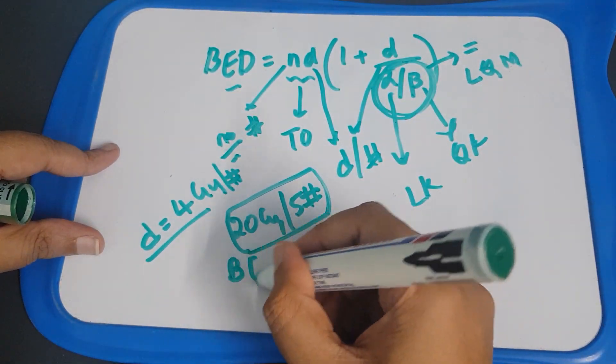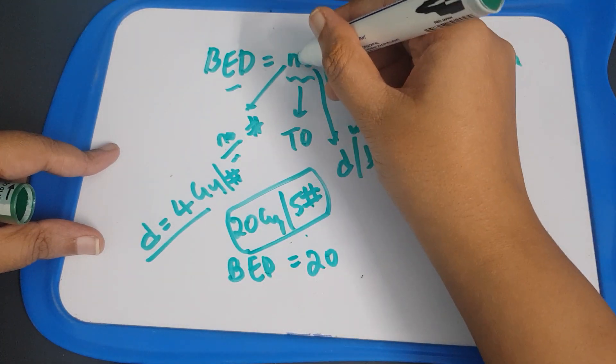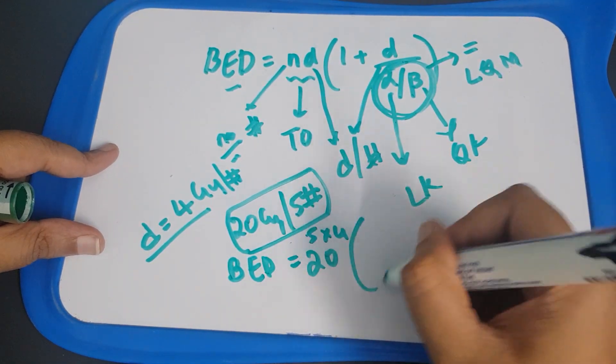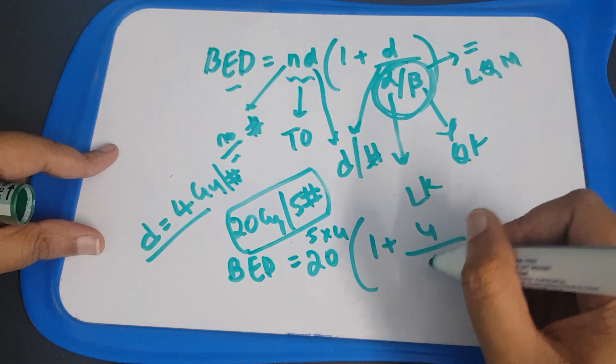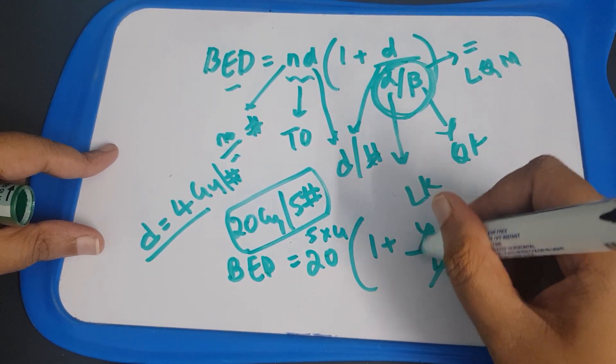BED will be 20, that is 4 if you separate it, it will be 5 into 4, 1 plus 4 divided by alpha by beta. In this case we can take it as 4.